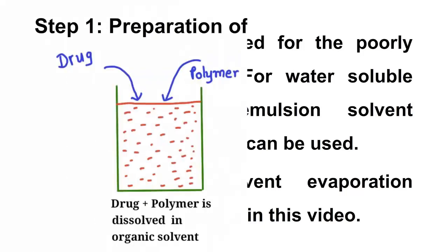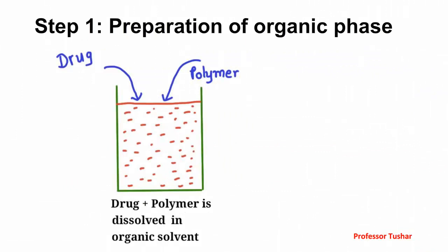The first step is the preparation of the organic phase. Drug and polymer mixture is dissolved in organic solvent, and this solution is kept aside with proper covering.